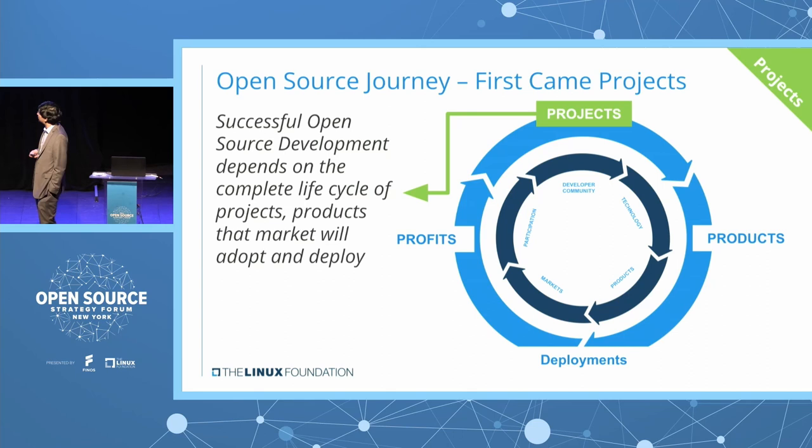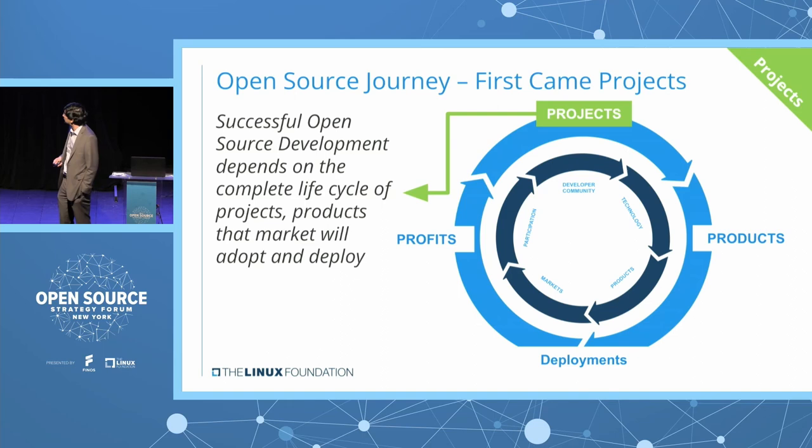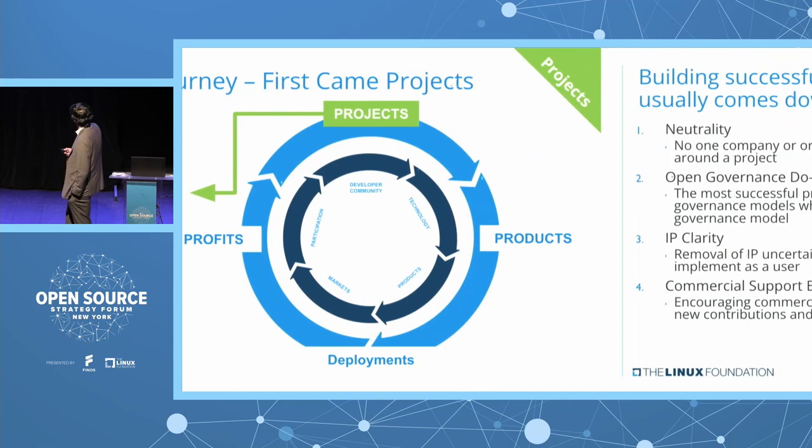The project is just the first step. You build that project, go through a cycle into products and deployments, and eventually get to profits. It takes sometimes a couple of years, so you won't have a successful open source project in year one. Take Phenos for example — it's grown over the last three to four years to get to this stage, and it's still continually growing. Then you build the developer community around the program as well.